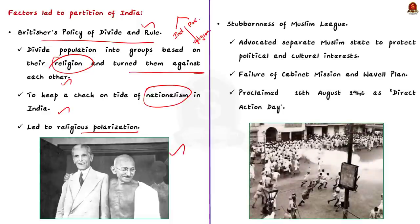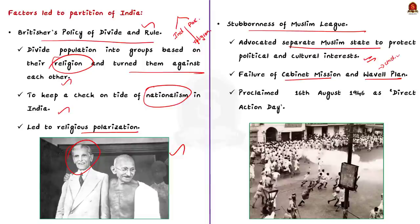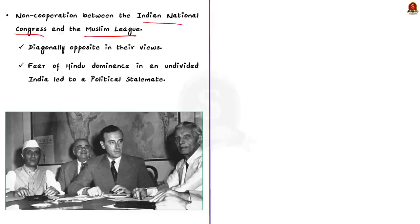The second factor is the stubbornness of Muslim League. The All India Muslim League under Muhammad Ali Jinnah's leadership advocated for a separate Muslim state to protect their political and cultural interest. Despite the proposals like cabinet mission and viable plan to keep an undivided India with conditions favorable to the Muslims, the Muslim League rejected them. And they proposed a divided India being divided on religious lines. It even proclaimed 16th August 1946 as direct action day in order to put forth their demand for a separate Muslim homeland. This is the second major factor.